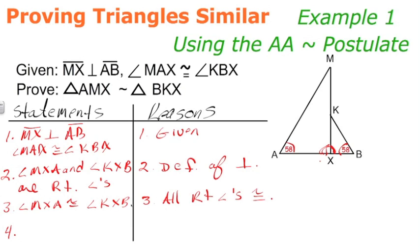We have angle-angle similarity. So we can make our triangle similarity statement stating or our proof statement saying that triangle AMX is similar to triangle BKX. And that's by angle-angle similarity. Similarity proofs are much like congruence proofs.